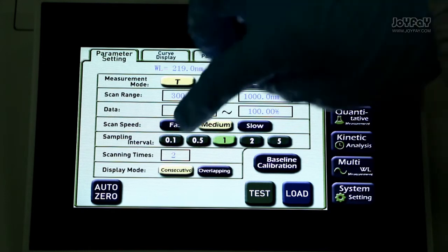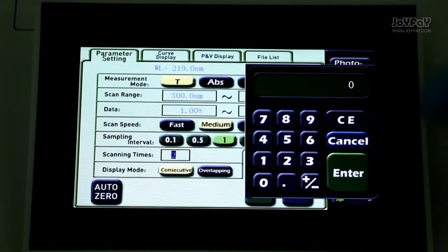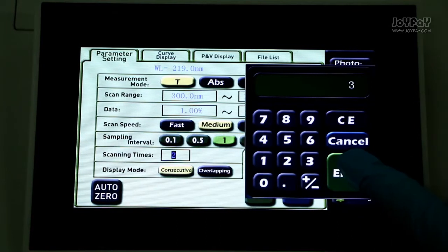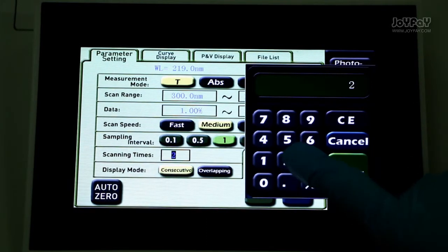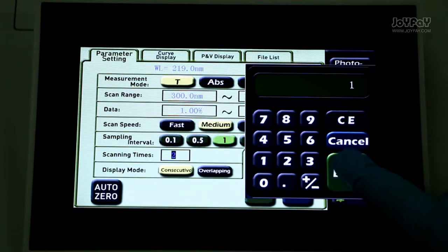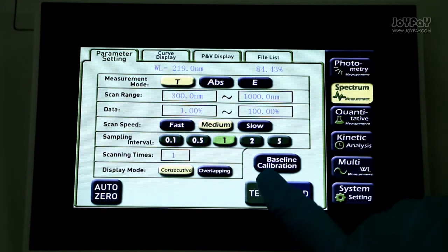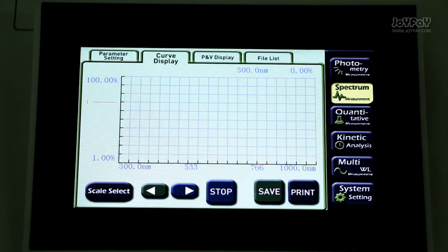You can set scanning times according to different requirements. Click the input box after scanning times and input 1 to 3. I will enter one. Press test. The screen will move to the second tag.